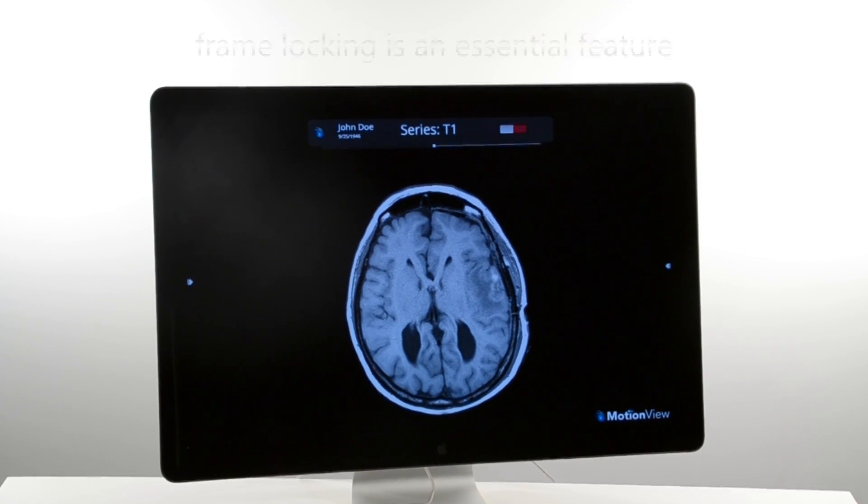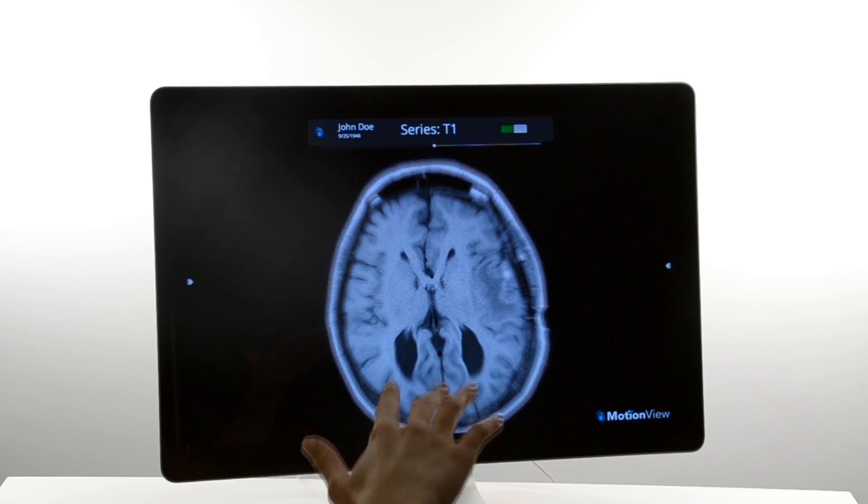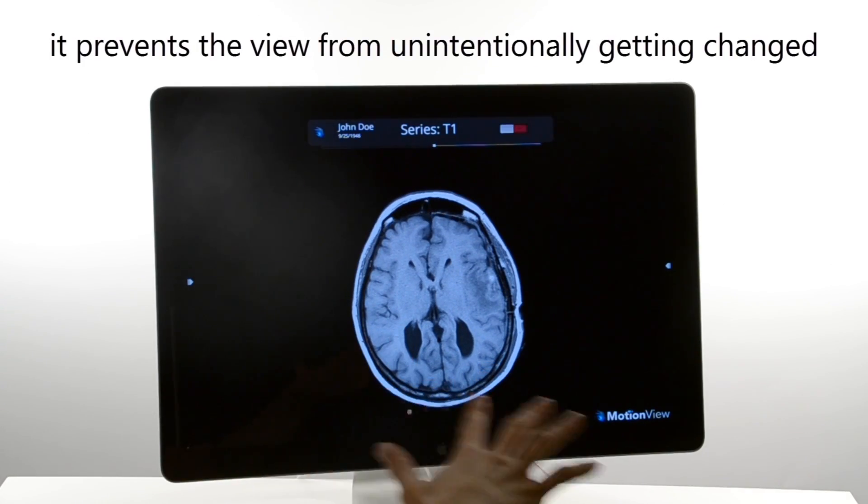One of the design challenges we faced was to prevent any unwanted interactions with the viewer in case someone accidentally wanders into the field of view of the device. The way people use gesture control varies slightly from person to person, but the software should be able to adapt to a person rather than the person adapting to the software.